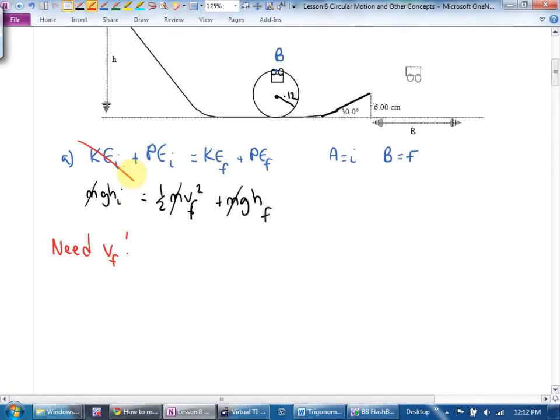Let's walk down this. Do I know the final height? If the loop has a radius of 0.12 meters, how far from here to the top? 12. How far from here to the bottom? What's the total height? 0.24, 24 centimeters. So I know that. Do I know v at the top? Well, I don't know it. So I'm going to write a little note to myself here. Need v final.